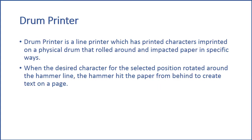The drum printer and the chain printer, which we will discuss next, are both line printers. The drum printer is a line printer which has printed characters imprinted on a physical drum that rotates around and impacts the paper. When the desired character for a selected position rotates around to the hammer line, the hammer hits the paper from behind to create text.